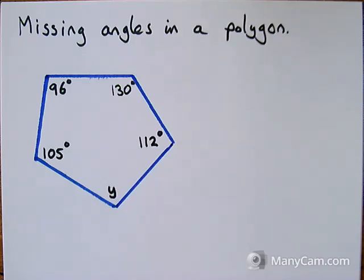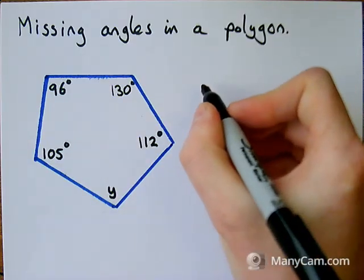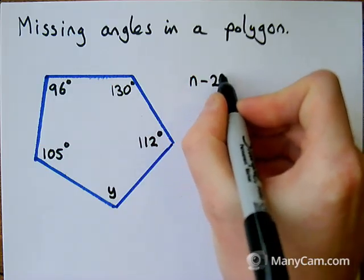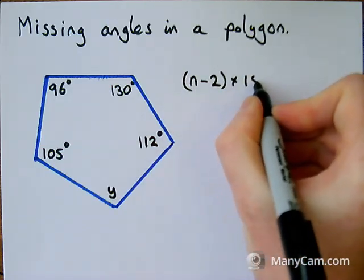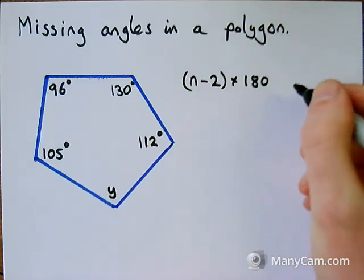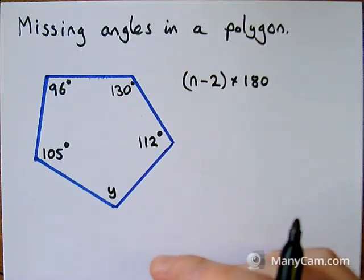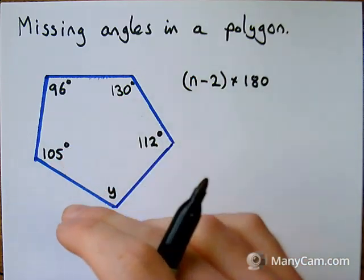Hello, in this video I'm going to show you how we can work out a missing angle from a polygon. In the last video we learned how to use the formula (n-2) times by 180 to find out the total amount of degrees that are going to be in a polygon.